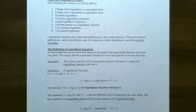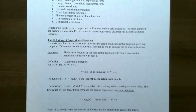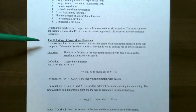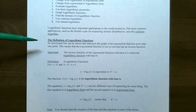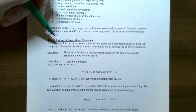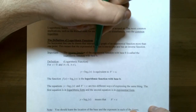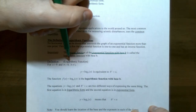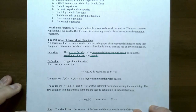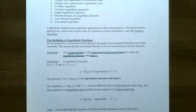Logarithms have several important applications in the world around us. One of the applications involves using the common logarithm to measure how strong an earthquake is on the Richter scale. We're going to get to that in the next video, but first we're going to start with the definition of a logarithmic function. Keep in mind from the previous video that exponential functions are one to one — they pass the horizontal line test. So logarithmic functions turn out to be the inverse of an exponential function. The inverse function of an exponential function with base B is called the logarithmic function also with base B.